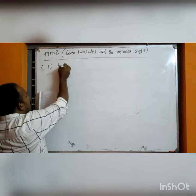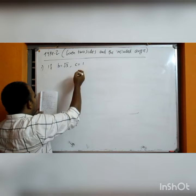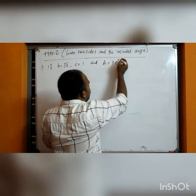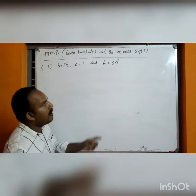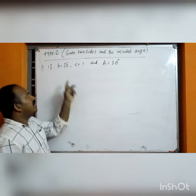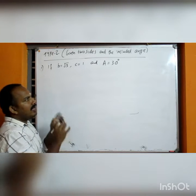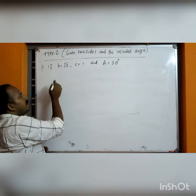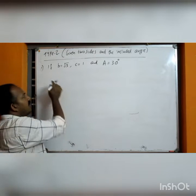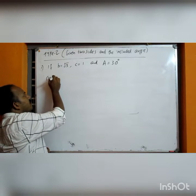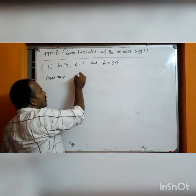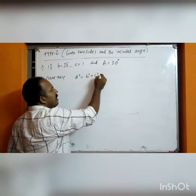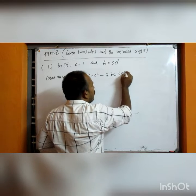Here is our problem: if b equals root 3, c equals 1, and angle A equals 30 degrees, solve the triangle — meaning find the other angles and the third side. By the cosine rule: a squared equals b squared plus c squared minus 2bc cos A.